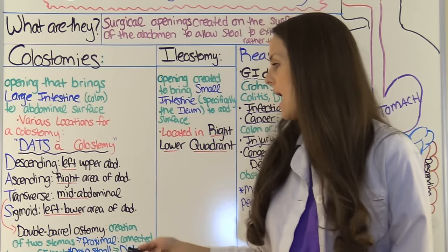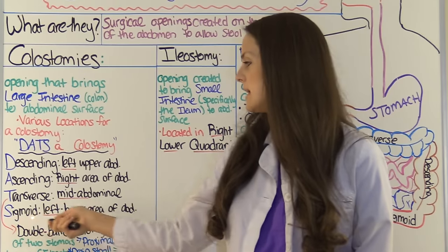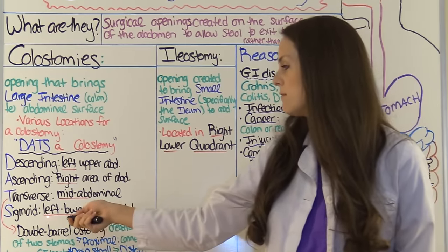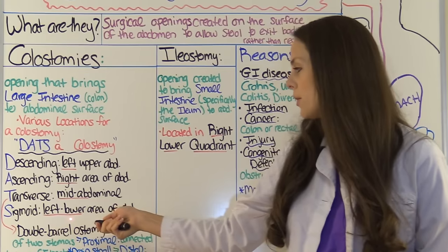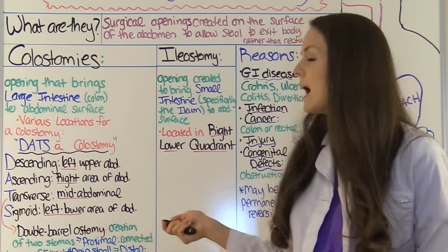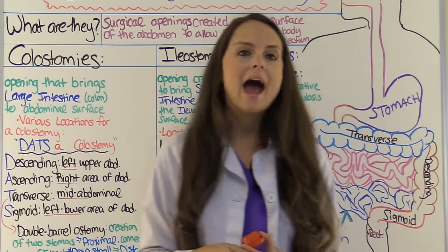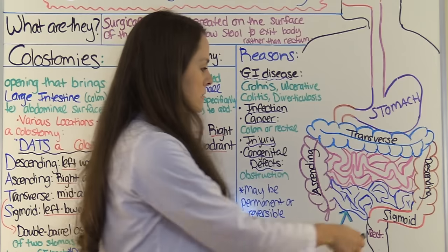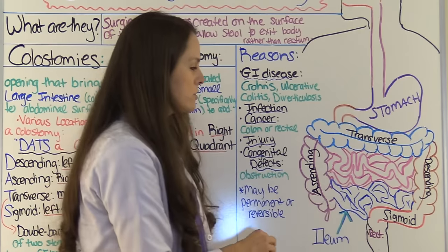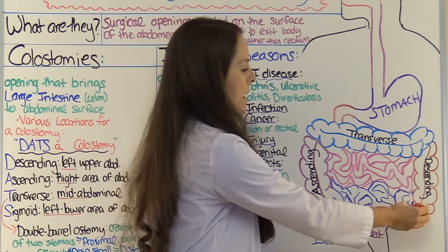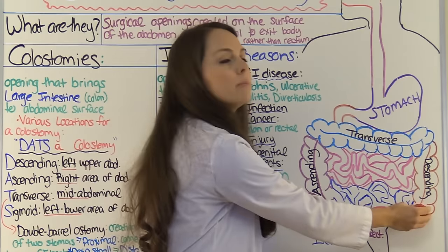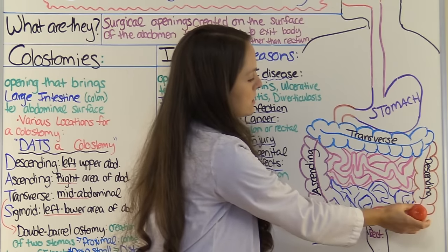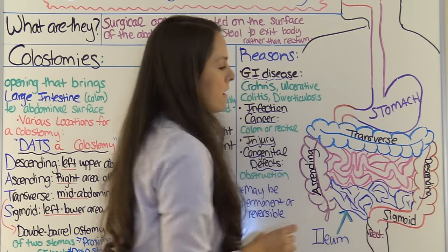And S is for sigmoid colostomy. This can be found in the lower area of the abdomen where the sigmoid colon is — a little bit lower than the descending colon.